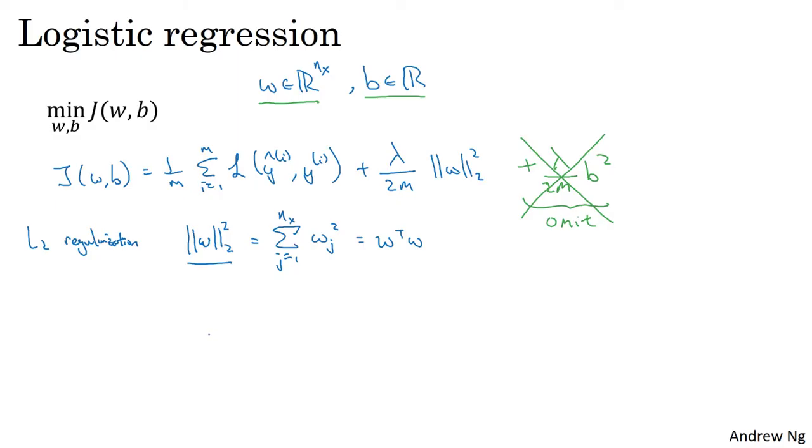L2 regularization is the most common type of regularization. You might have heard of L1 regularization, where instead of the L2 norm, you add lambda over M times the L1 norm of the parameter vector W. If you use L1 regularization, W will end up being sparse, meaning the W vector will have a lot of zeros. Some say this helps compress the model since zero parameters need less memory. However, in practice, L1 regularization helps only a little bit, and L2 regularization is used much more often for neural networks.